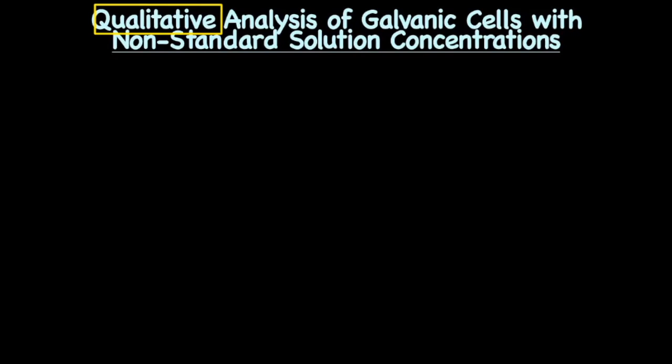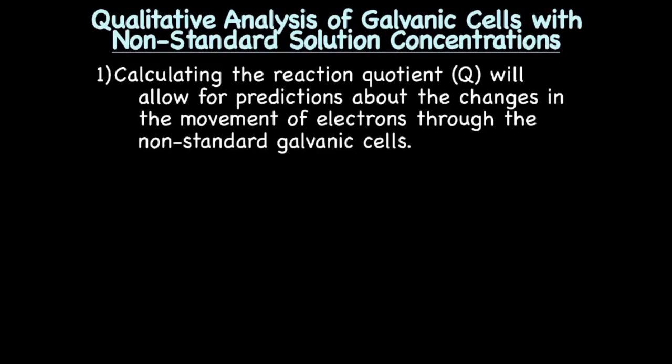Qualitative analysis of galvanic cells with non-standard solution concentrations. When we say qualitative analysis, we're figuring out how a change in concentration would affect the reaction — for example, a greater or lesser reaction — not the specific voltage, but how that voltage would change qualitatively, meaning greater or lesser than standard. Calculating the reaction quotient Q will allow for predictions about the changes in the movement of electrons through non-standard galvanic cells.